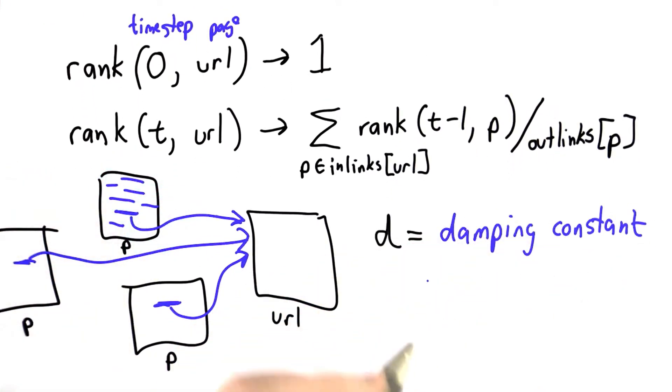We'll call that d, the damping constant. A typical value for that is something less than 1, and a good value is something like 0.8.